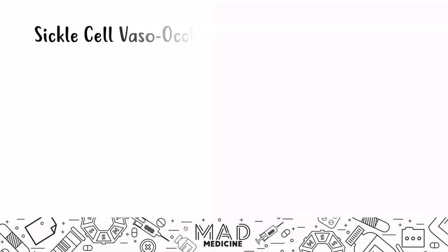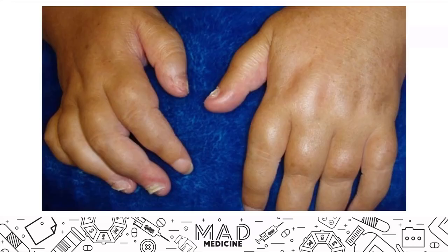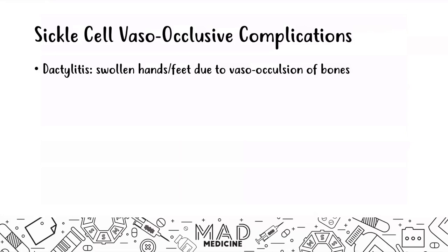Now let's talk about vaso-occlusive complications. First, dactylitis — swollen hands or feet due to vaso-occlusion of the bones. You will also see autosplenectomy, where the spleen becomes functionally non-working due to the high amounts of sickle cells passing through it, leading to a decrease in splenic function.